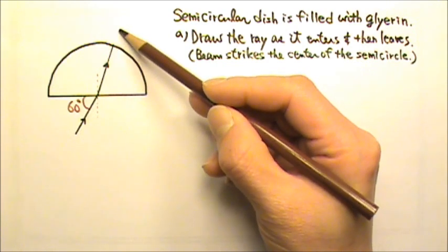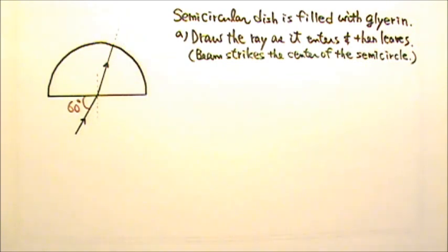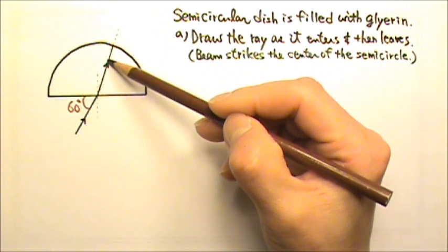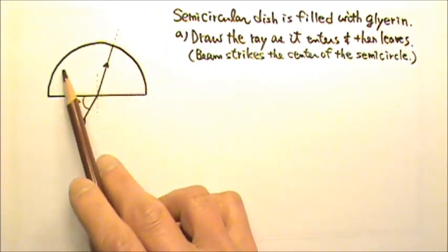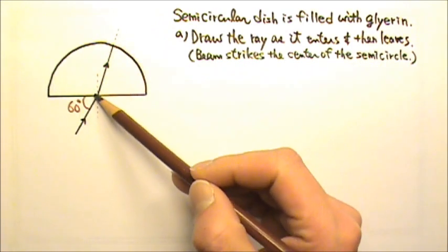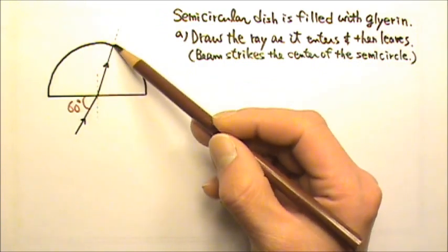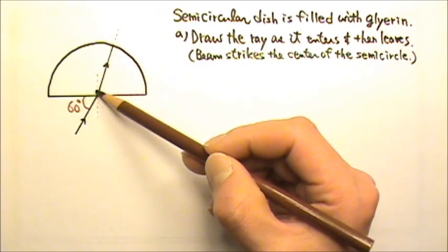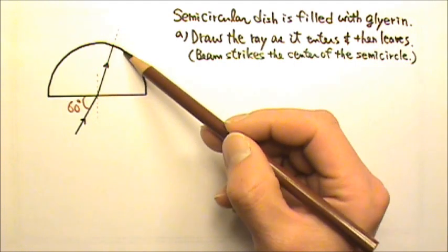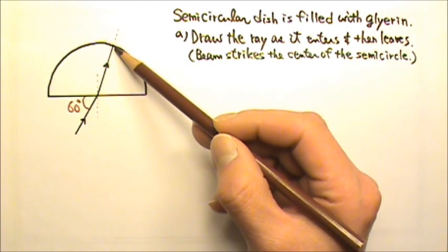Then it has to leave the glycerin and enter the air. Again, I drew the normal line. Because this is a semicircle, and the ray comes from the center of the circle, this is the radius of the semicircle. Since the radius is always perpendicular to the tangent line, this is the normal line.